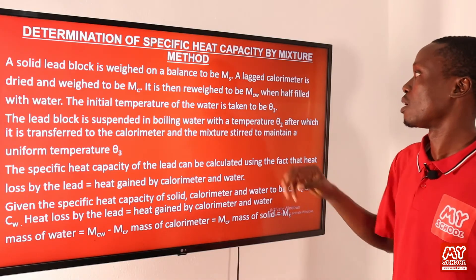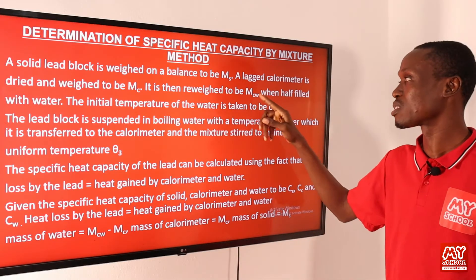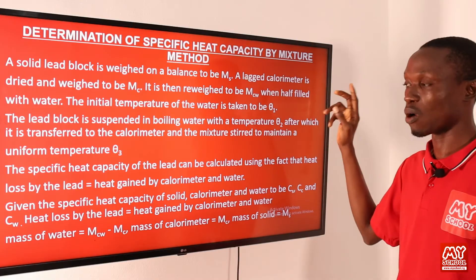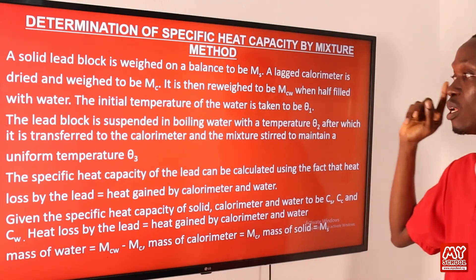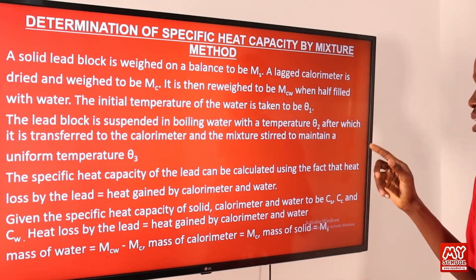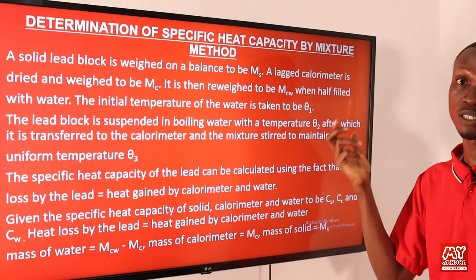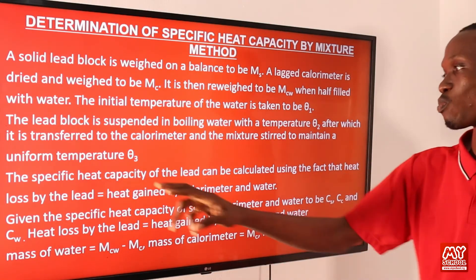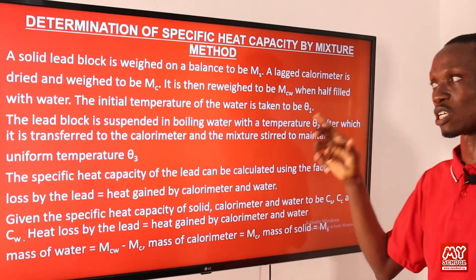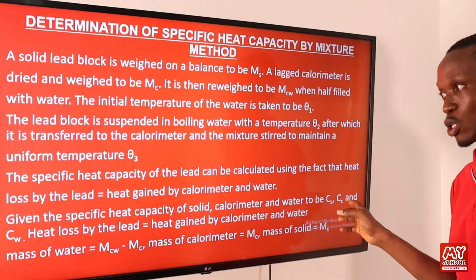A calorimeter is dried and weighed to be m_c, then reweighed as m_cw when filled with water. The initial temperature of the water is taken as θ₁. The lead block is suspended in boiling water at temperature θ₂, then transferred to the calorimeter, and the mixture reaches a uniform temperature θ₃. Note that the calorimeter is the instrument used for measuring heat.